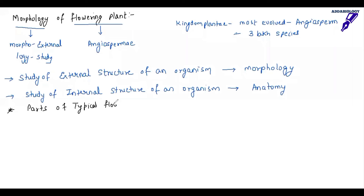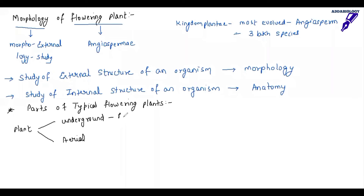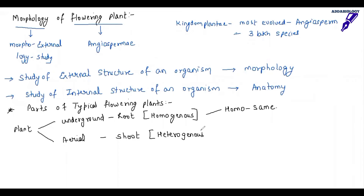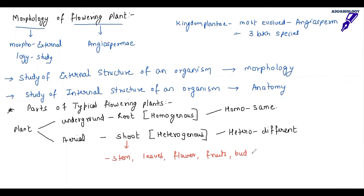Let us first understand the parts of a typical flowering plant. Any typical flowering plant has two important parts: the underground part and the aerial part. The underground part is root, which is homogeneous — means same. The aerial part is the shoot, which is heterogeneous — it means it is different. The shoot has stem, leaf, flower, fruit, buds, etc.